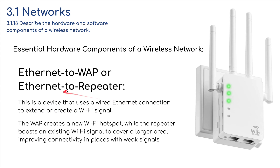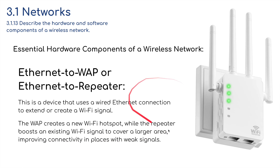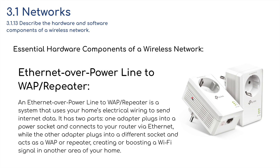We've also got an ethernet to WAP repeater. This is a device that uses a wired ethernet connection to extend or create a Wi-Fi signal. The WAP creates a new Wi-Fi hotspot, while the repeater boosts an existing Wi-Fi signal to cover a larger area, improving connectivity in places with weak signals.